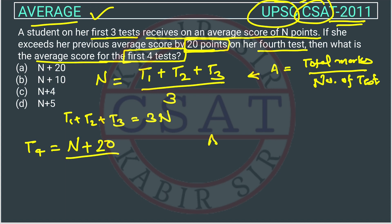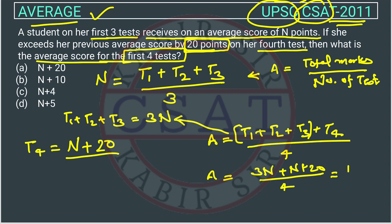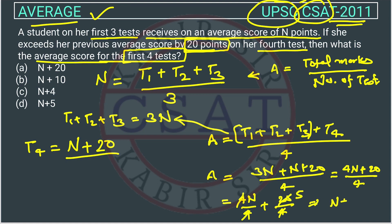The average score of four tests will be (t1 + t2 + t3 + t4) / 4. Substituting: t1 + t2 + t3 = 3n and t4 = n + 20, so we get (3n + n + 20) / 4 = (4n + 20) / 4, which simplifies to 4n/4 + 20/4 = n + 5.